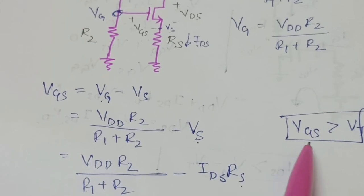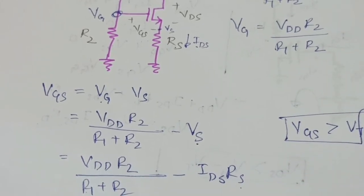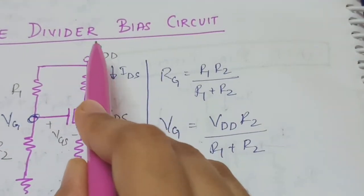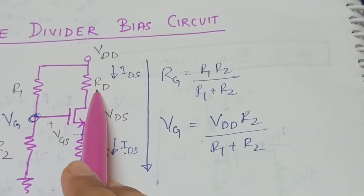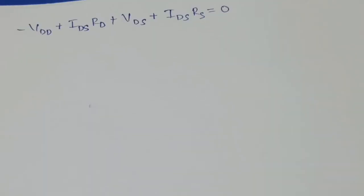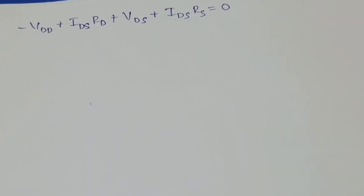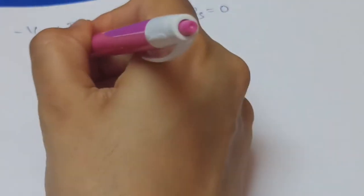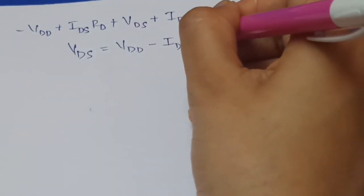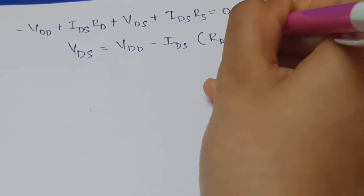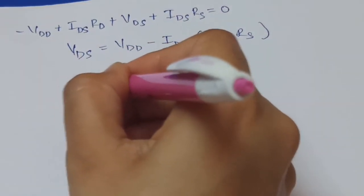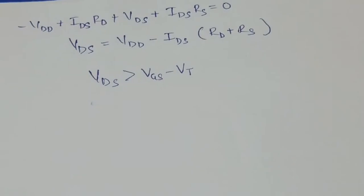Applying KVL in the drain loop: VDD − ID * RD − VDS − ID * RS = 0. Therefore: VDS = VDD − ID * (RD + RS). RD and RS are selected such that VDS is greater than VGS minus VT, ensuring the MOSFET operates in the saturation region.